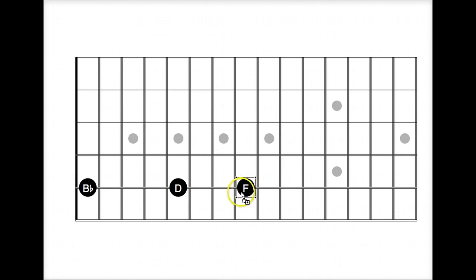So B-flat, D, F, and then a minor seventh above B-flat, that's ten half steps. So that's going to be here on the A-flat. So the notes we have are B-flat, D, F, and A-flat.